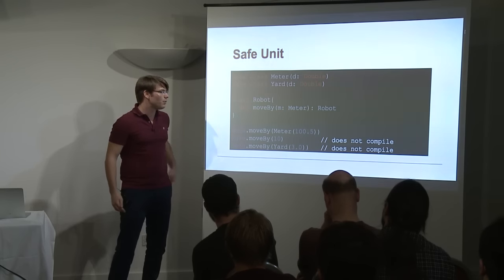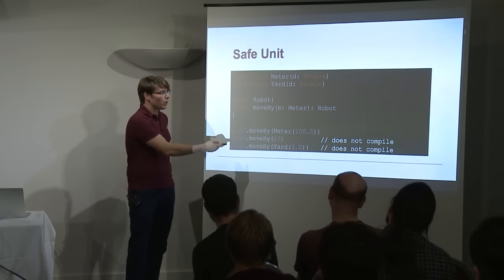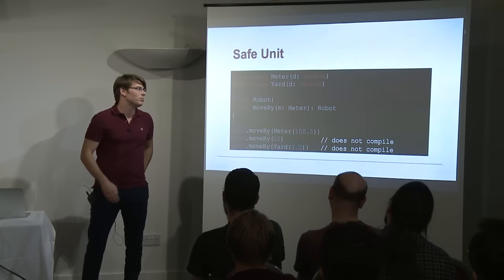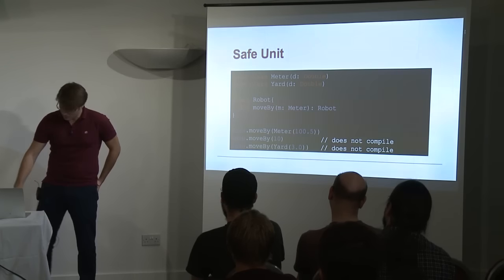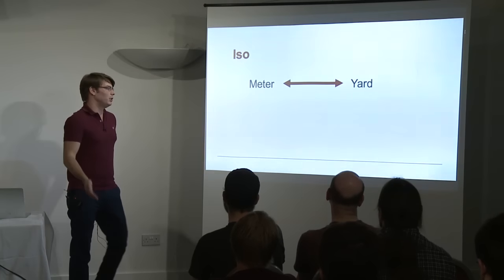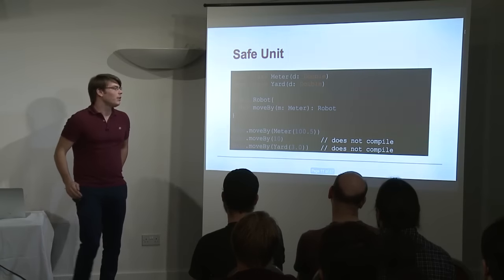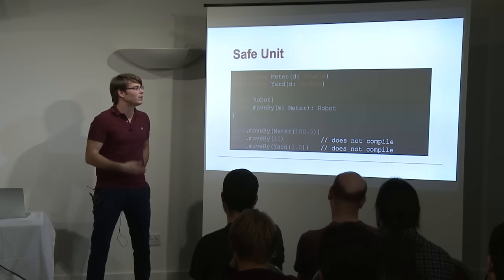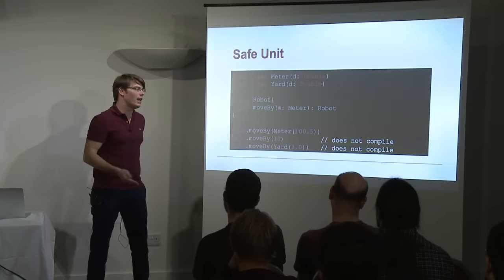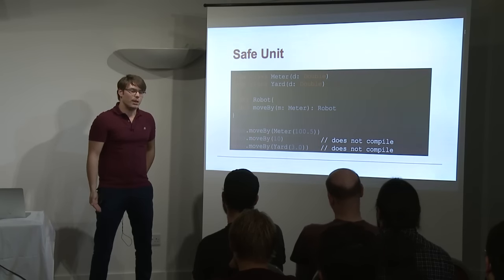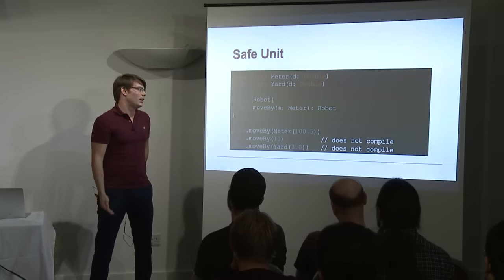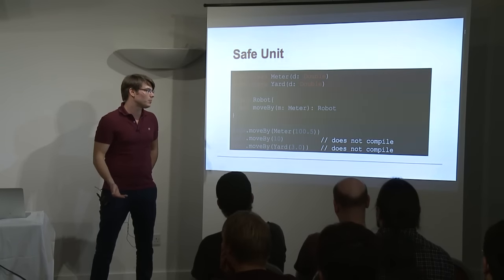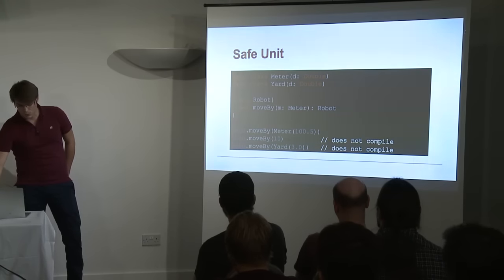The benefit is that you can call it using meters, but if someone tried to call it using a double or yard, it doesn't compile. There may be some performance implications but there are ways in Scala to make it better. How can we use ISO to help us with this problem? Since it's an API, we probably want to offer different metric systems. We could overload the move_by method and provide all different metrics, but it's pretty annoying and not maintainable. One way to simplify this API is to use ISO.